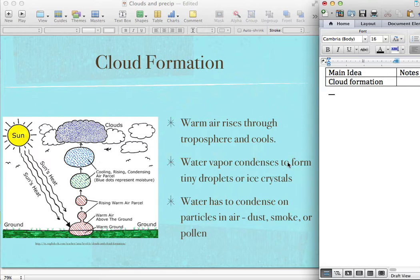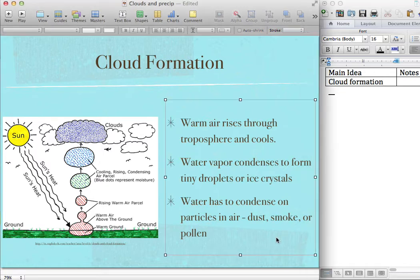Eventually, the water vapor condenses to form tiny droplets or ice crystals, depending on the temperature. If it's above freezing, there'll be droplets. Below freezing, little ice crystals. And this water has to condense on little particles in the air, whether it's dust, smoke, pollen, or other things.